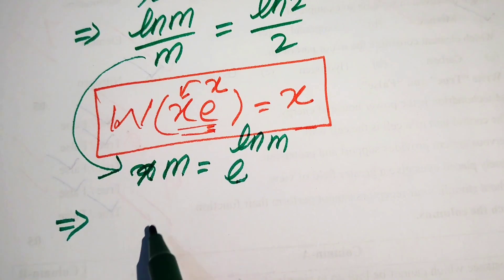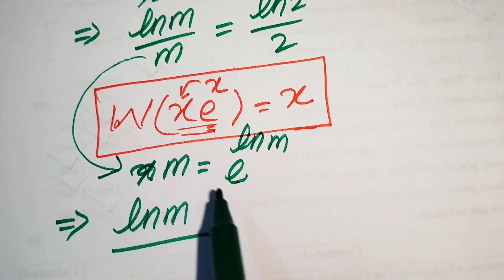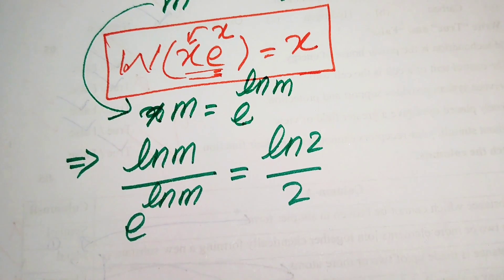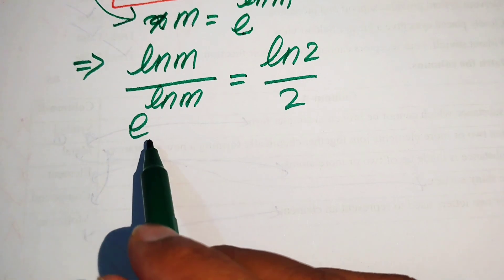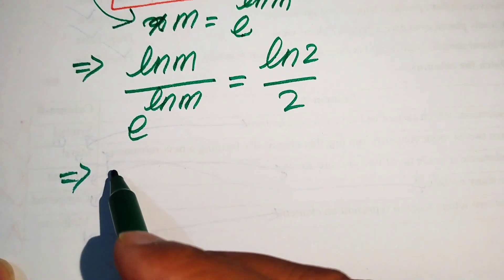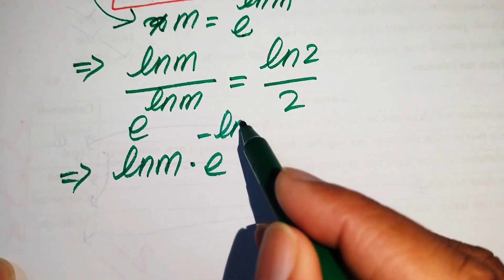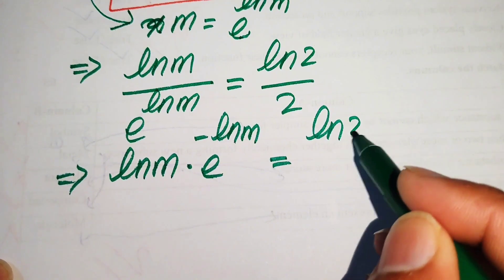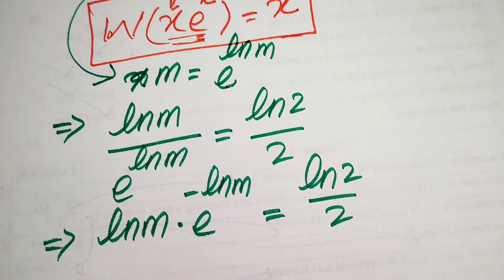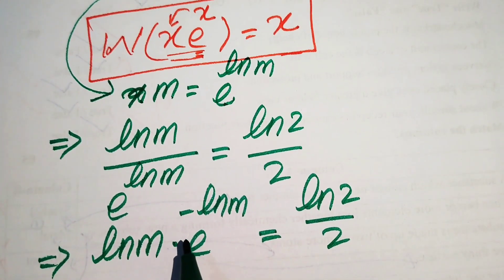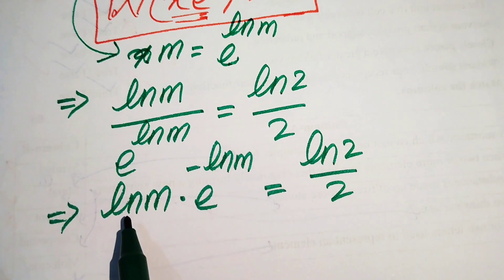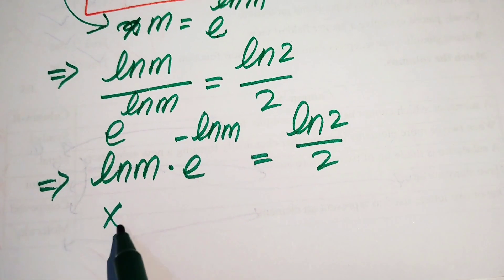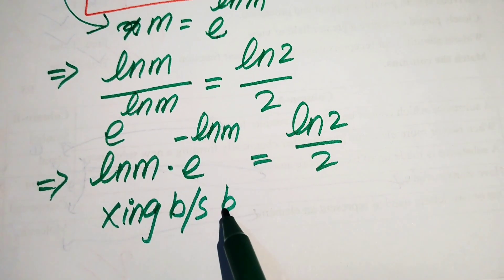Our equation is rewritten as log(m) divided by e to the power of log m, equals log(2) divided by 2. Moving the denominator upward, the exponent becomes negative: log(m) times e to the power of minus log m equals log(2)/2. We then multiply both sides by minus 1 to introduce the required negative sign.